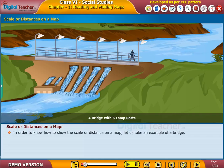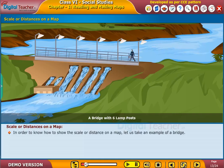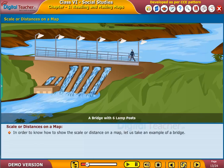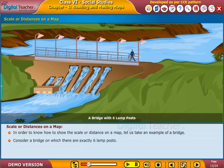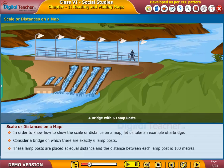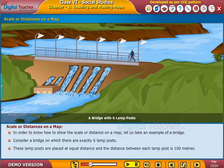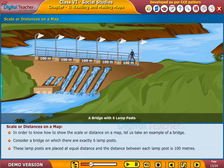In order to know how to show the scale or distance on a map, let us take an example of a bridge. Consider a bridge on which there are exactly six lamp posts. These lamp posts are placed at equal distance and the distance between each lamp post is 100 meters.